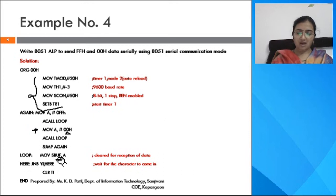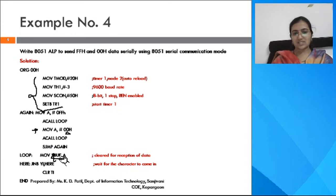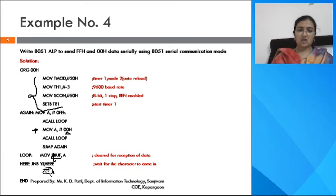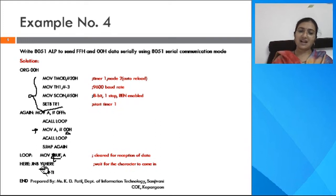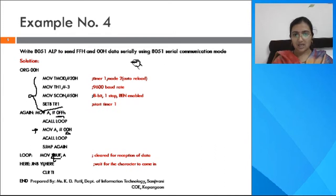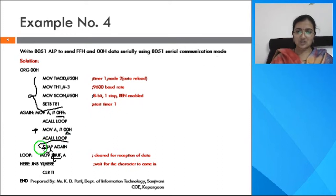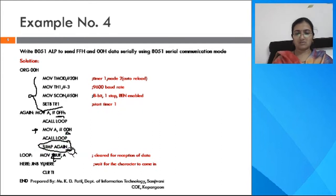After clearing TI, place 00H data into accumulator A, then move it from A to SBUF. The data is sent to the external device, and while sending 00H, the 8051 microcontroller monitors the TI flag. When the stop bit is transferred, TI gets raised indicating 00H was sent successfully. Then clear TI again to send FFH. If the problem does not specify continuous transmission, you can skip the loop and send the data just once.